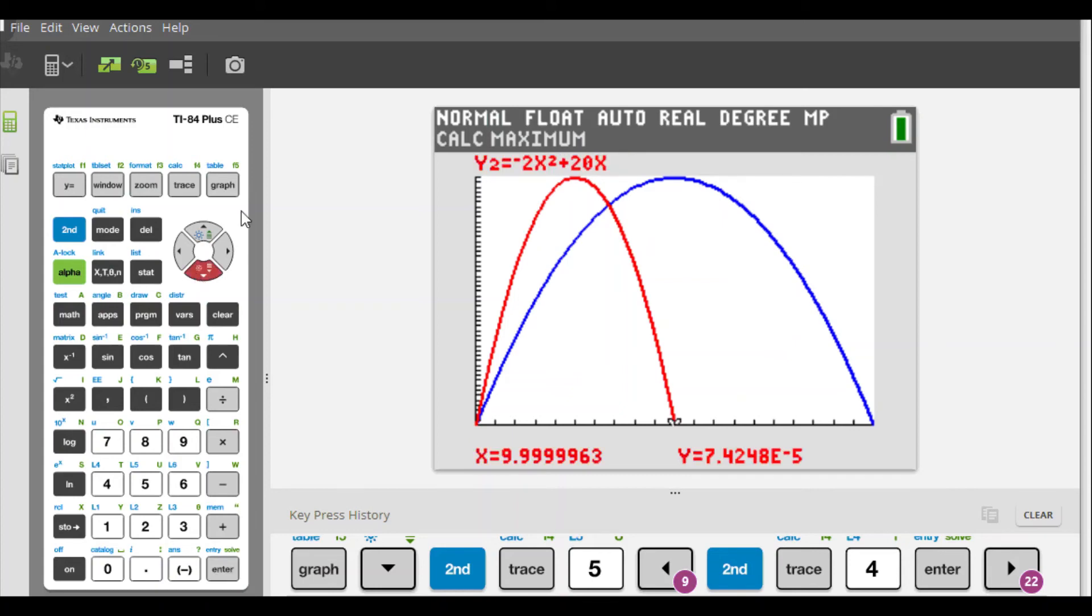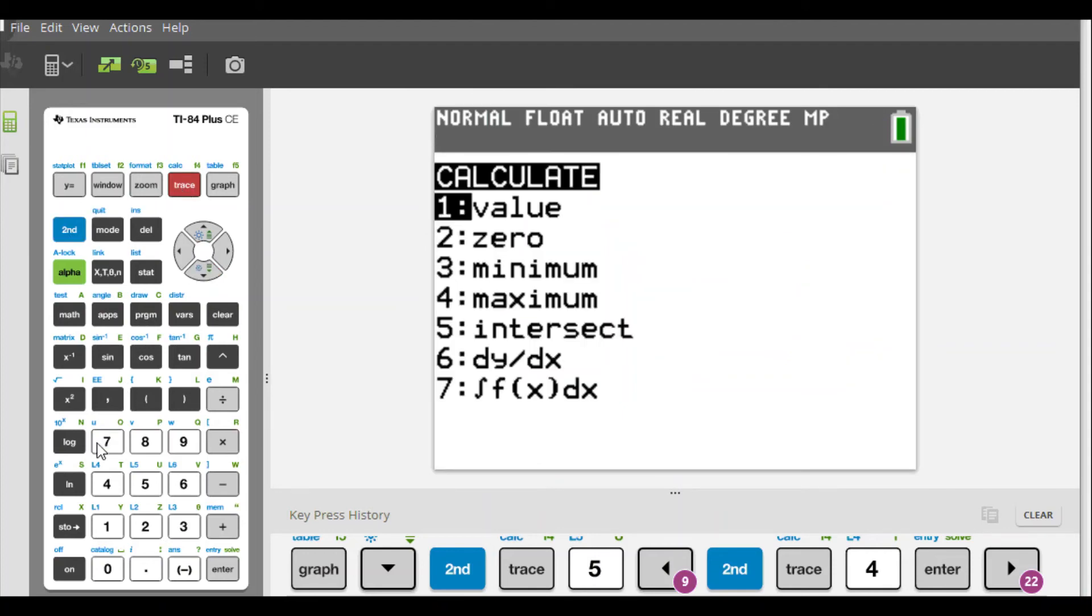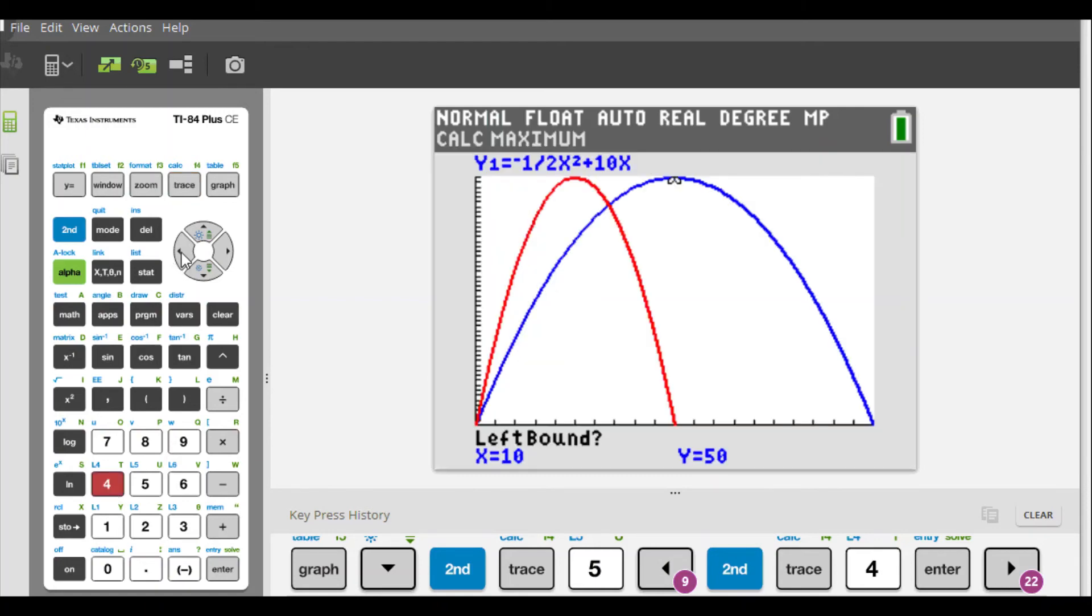Alright. So now to our second graph, which is in this case, the Y2. Let's find this here. Second calc. Again, we're looking for maximum. Why is it on Y1, should be in this case? Here we go. Alright. Here we go. Okay. So now we're going to a little bit to the left here to highest point, enter, a little bit to the right to highest point, enter.